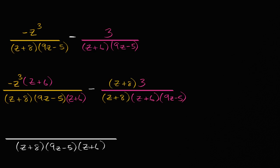So over here, just in this blue color, we want to distribute this negative z to the third. Negative z to the third times z is negative z to the fourth. Negative z to the third times six is minus six z to the third.